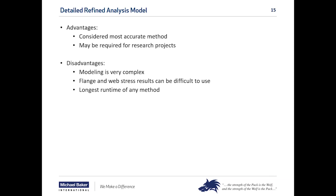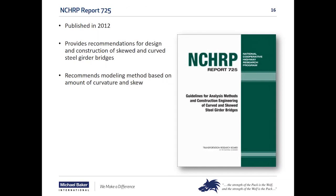A useful starting point to determine the appropriate modeling method is NCHRP Report 725, published in 2012, which provides recommendations for the design and construction of skewed and curved steel girder bridges. It recommends a modeling method based on the amount of curvature and skew for a particular bridge, and those analysis recommendations are equally applicable to load rating as well as design.